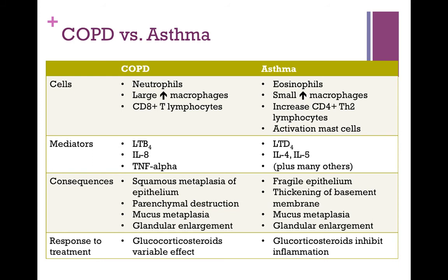There are important differences in the cells, mediators, and consequences of COPD and asthma, as well as a major difference in the response to specific treatment. In COPD, we typically see more neutrophils, a large increase in macrophages, and CD8 T-lymphocytes. In contrast, in asthma, we see eosinophils rather than neutrophils, a smaller increase in macrophages, an increase in CD4 TH2 lymphocytes as described through the hygiene hypothesis, and activation of mast cells.